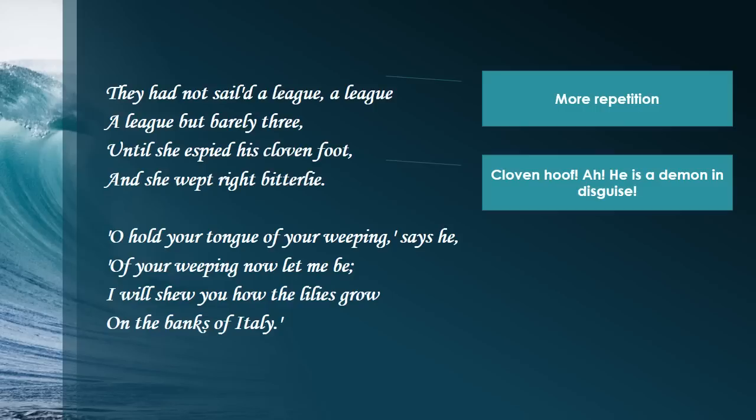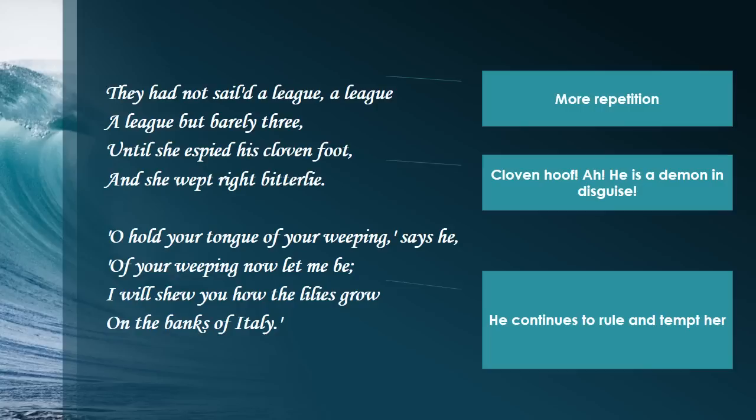And he's not very sympathetic. He just says, 'Oh, hold your tongue of your weeping, now let me be. I will show you how the lilies grow on the banks of Italy.' He's essentially saying, 'Shut up, but I'm still going to take good care of you.' So he's continuing to tempt her, but she's becoming more mastered by him.